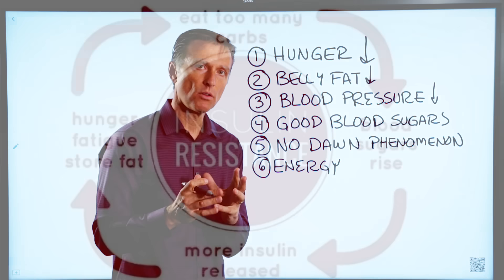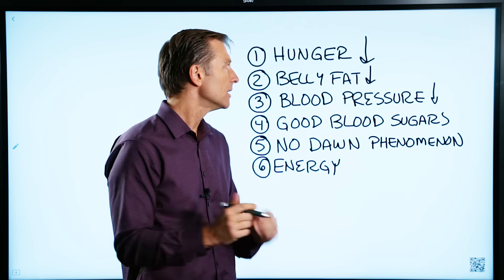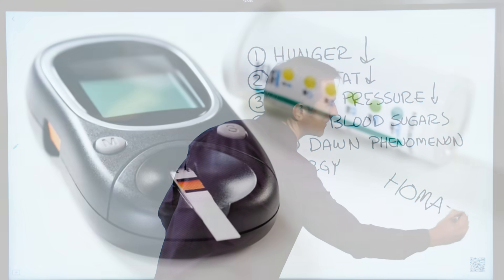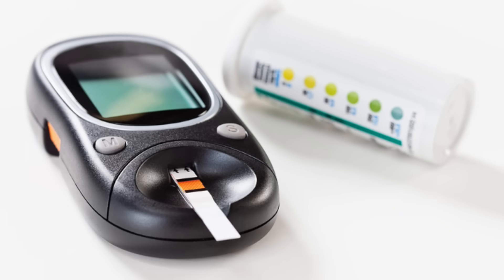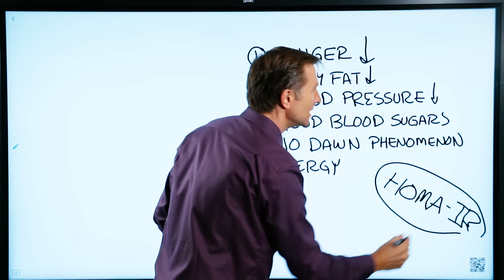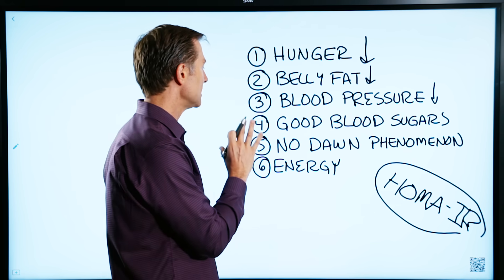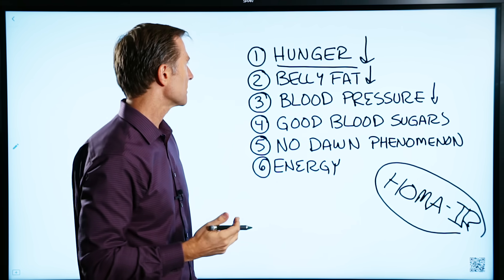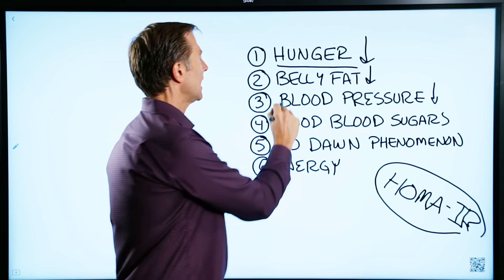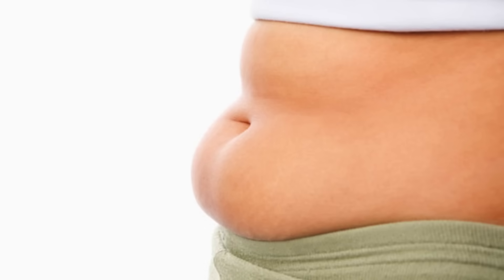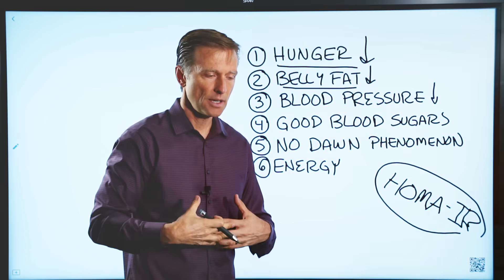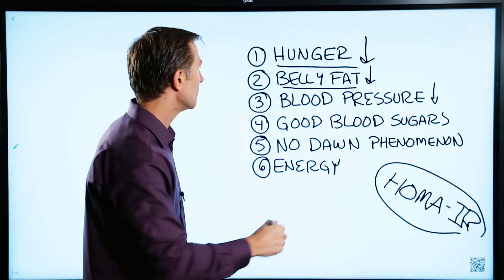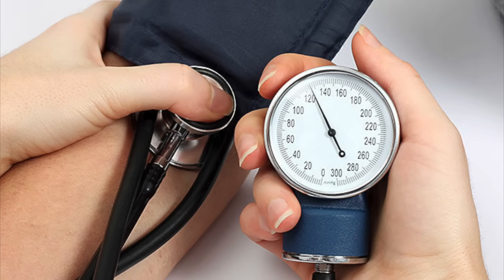The way that you know insulin resistance is going away, you can do a test called HOMA-IR. But honestly, I would just look at these six things. Number one: is your hunger going away? Can you go longer between meals without eating? Number two: how about your belly fat — is it disappearing? That means the fat around the organs, especially the liver fat, is going away. Number three: is your blood pressure going down?